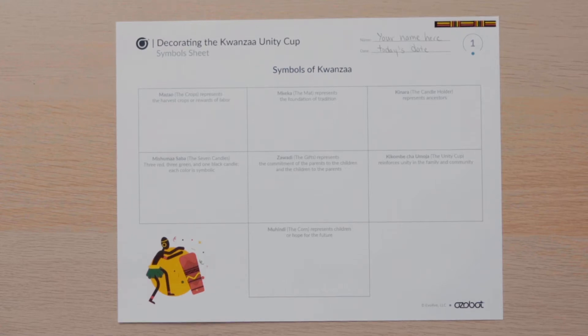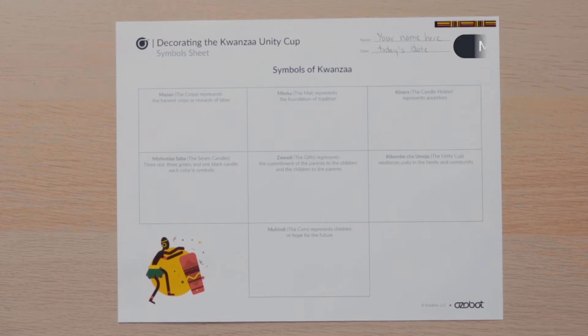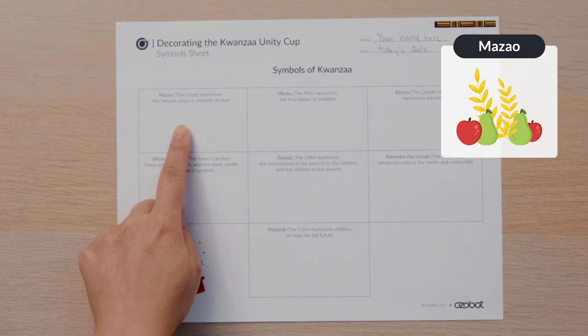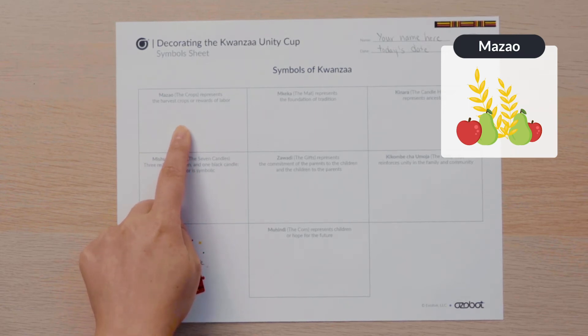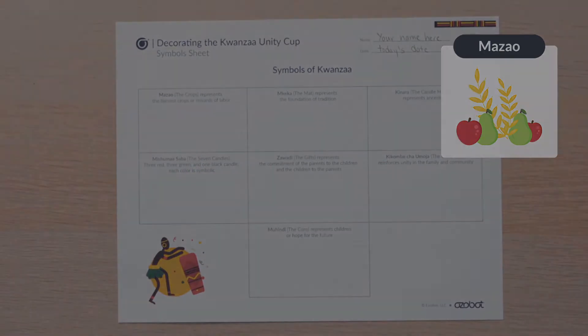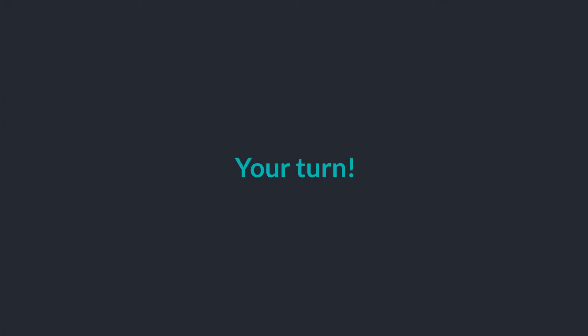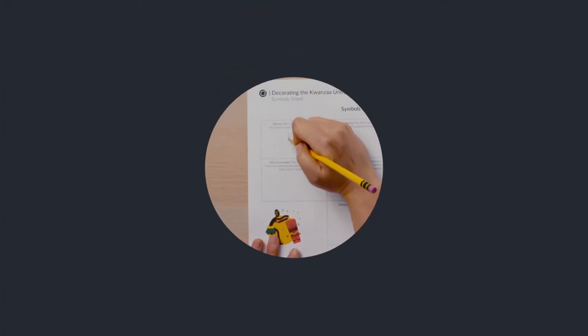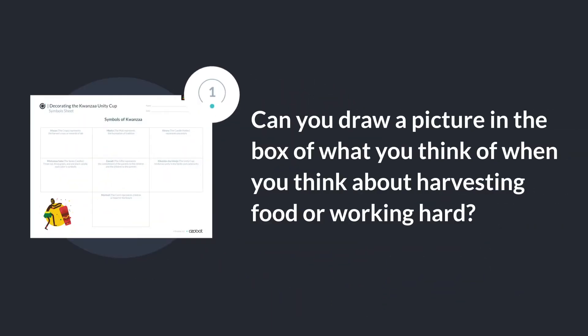The first box says Mazao, or the crops. This symbol represents the rewards of labor or the fruits of harvest. Can you draw a picture in the box of what you think of when you think about harvesting food or working hard?